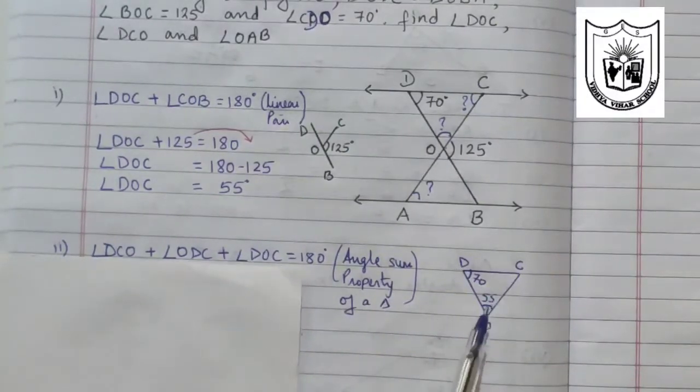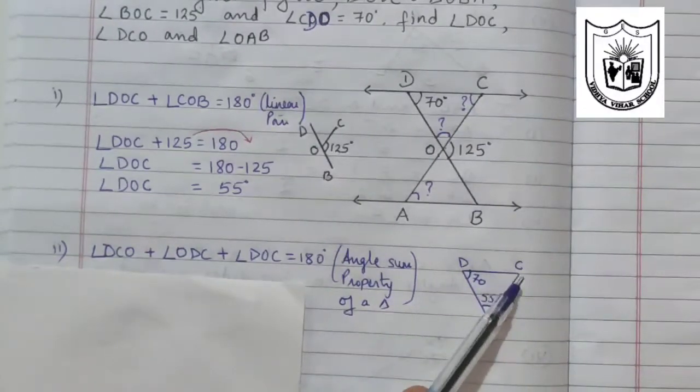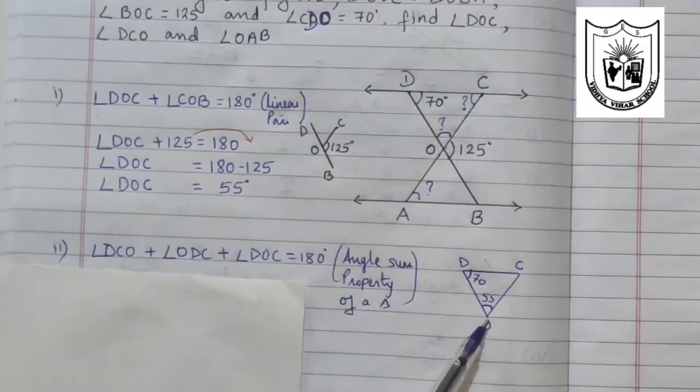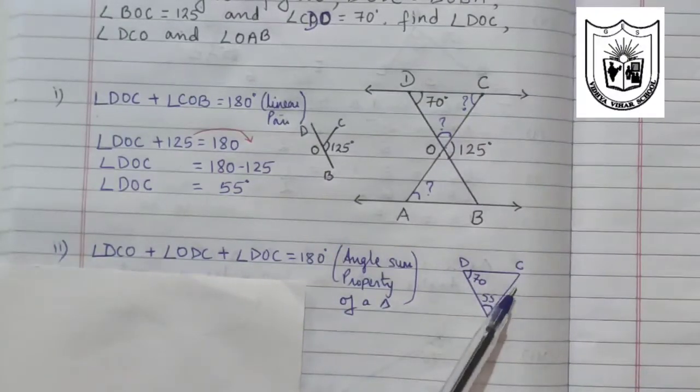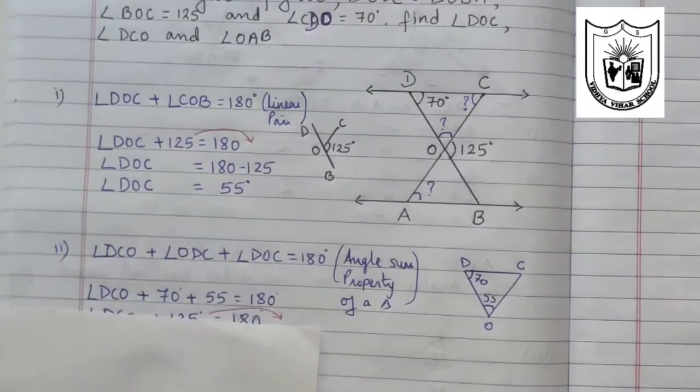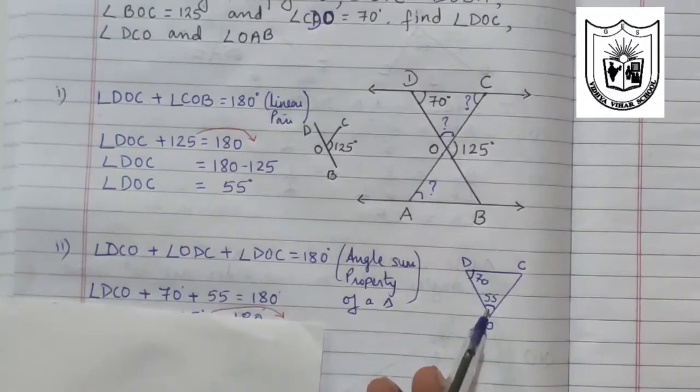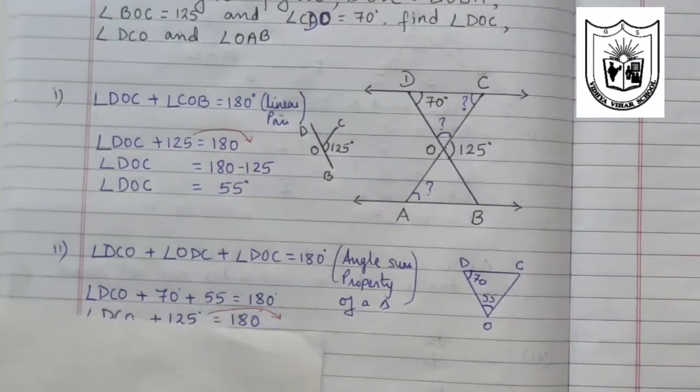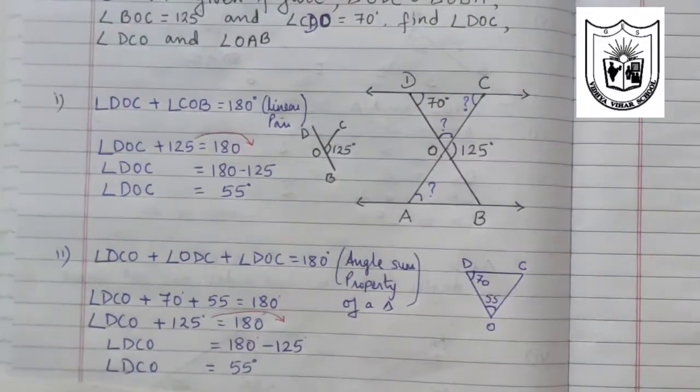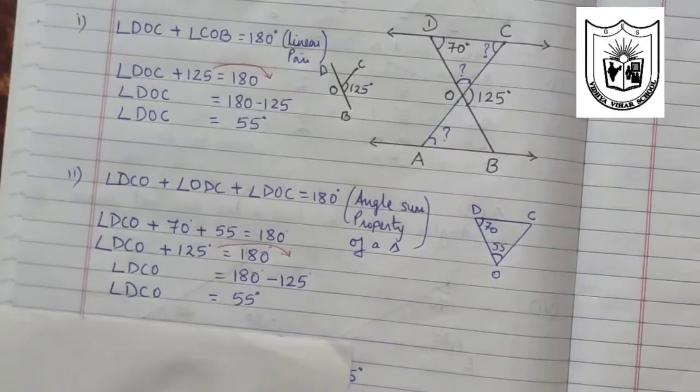Angle C can be written as DCO. Angle D is ODC or CDO. Angle O is DOC or COD. Add all three angles, it equals 180 degrees. DCO is unknown, so we keep it like that. This angle is 70 and this is 55. Add both and equal to 180 degrees. We have 125 after adding. Transpose it to the other side, it becomes negative and the answer is 55 degrees. We have also found DCO now.